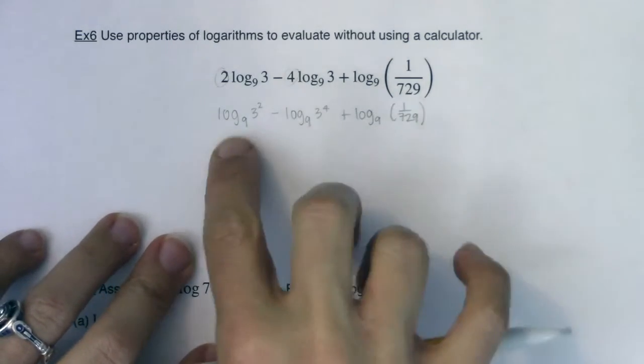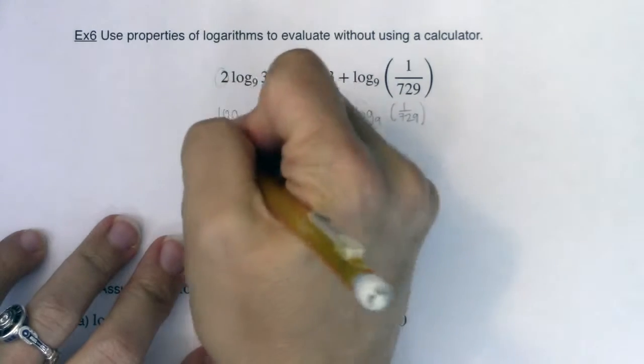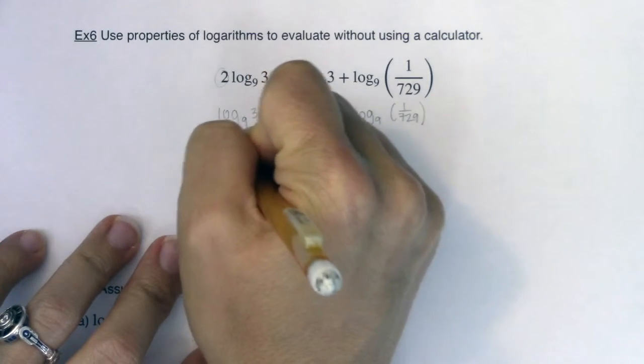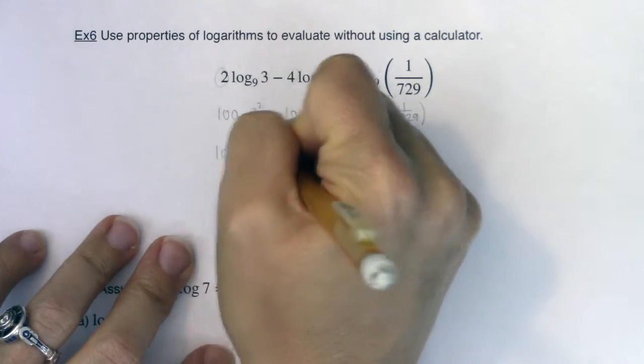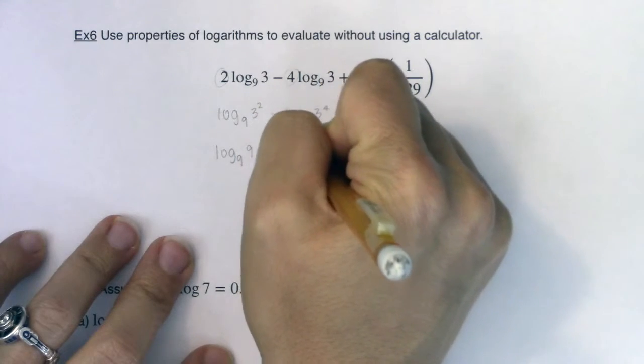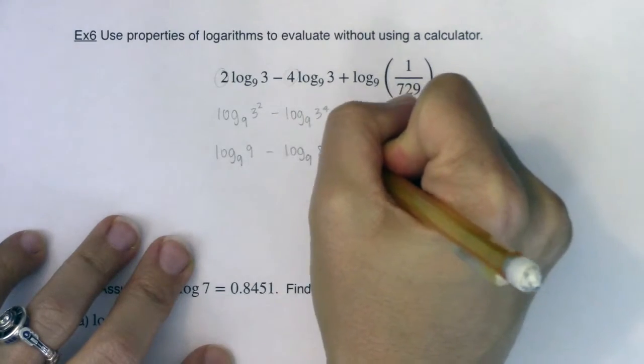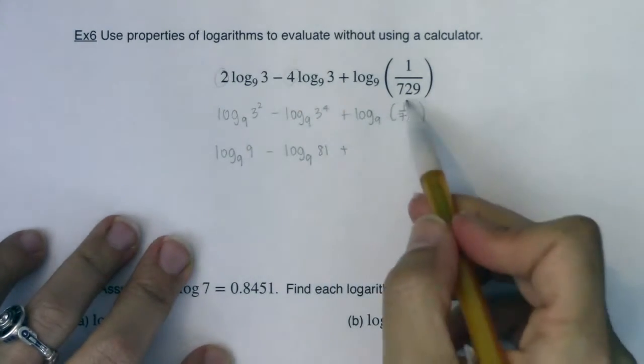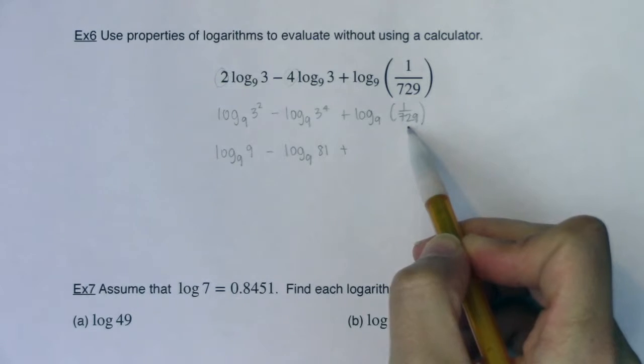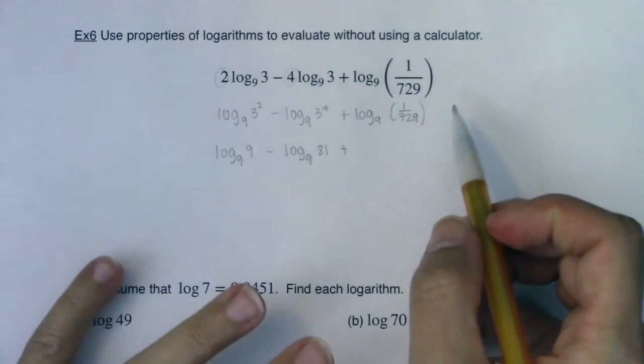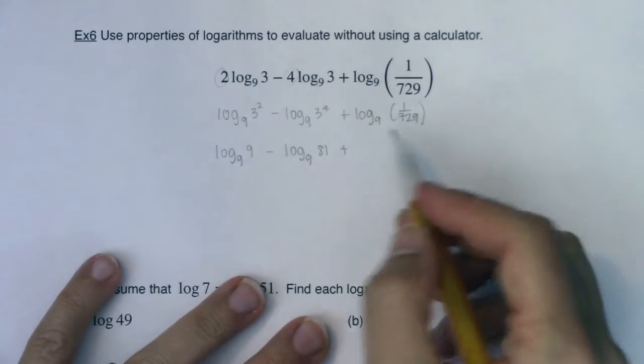So there's a couple of things you can do with this term. We'll talk about that in just a moment. Here I want to actually play these numbers out. So this is log base 9 of 9 minus log base 9, 3 to the 4th is 81. And this is log base 9 of 1 over 729. So there's a couple of things you can do just depending on how you see this.